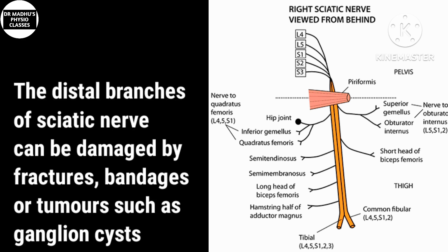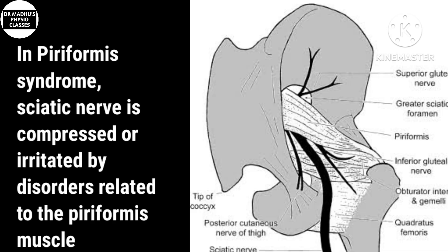The distal branches of the sciatic nerve can be damaged by fractures, bandages, tumors, or ganglion cysts. The diagnosis of piriformis syndrome is a controversial matter, but if there is no pathology in the lumbosacral spine, you can consider that the piriformis muscle is the cause of sciatic nerve entrapment — what presents as the signs and symptoms of piriformis syndrome. In this syndrome, the sciatic nerve is compressed at the greater sciatic foramen due to disorders related to the piriformis muscle.